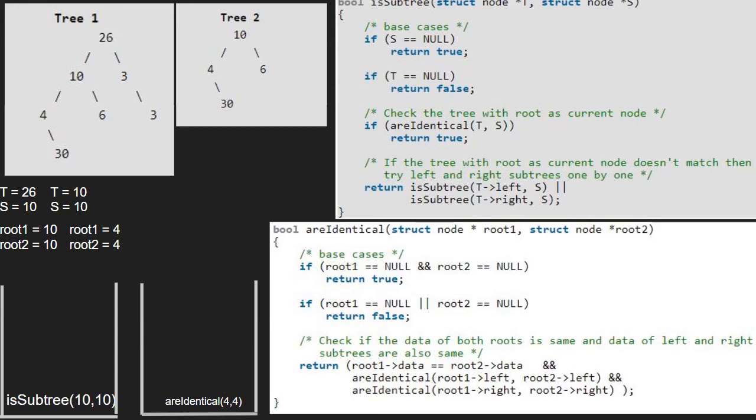Next, we pass the right child of 4 which is 30. So, root1 and root2 both will point to 30. Since both are equal, we call the left child of 30 which is null. As both the roots are pointing to null, we return true.